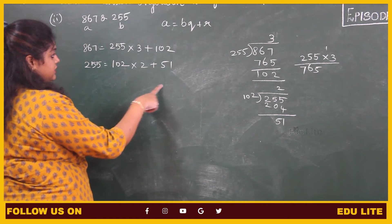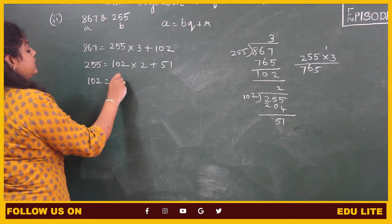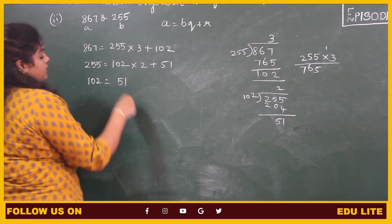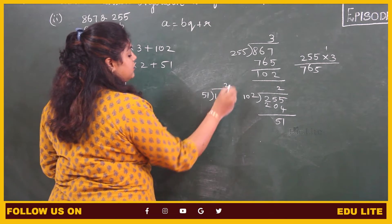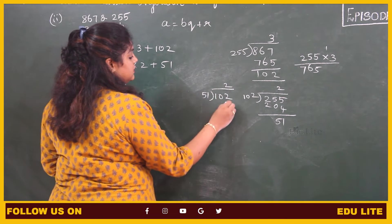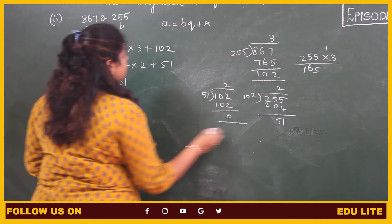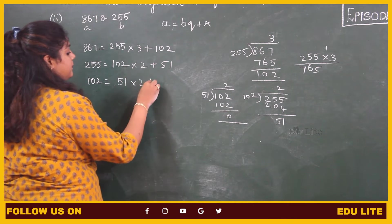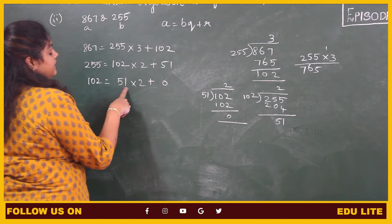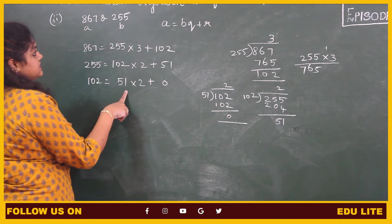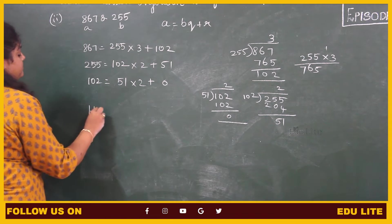Again the remainder is not equal to 0, therefore we have to proceed. The dividend is 102 and the divisor is 51. So 102 dividing it by 51: 2 times 102, remainder 0. So 51 into 2 plus 0. The remainder is 0, therefore 51 is the highest common factor of 867 and 255.